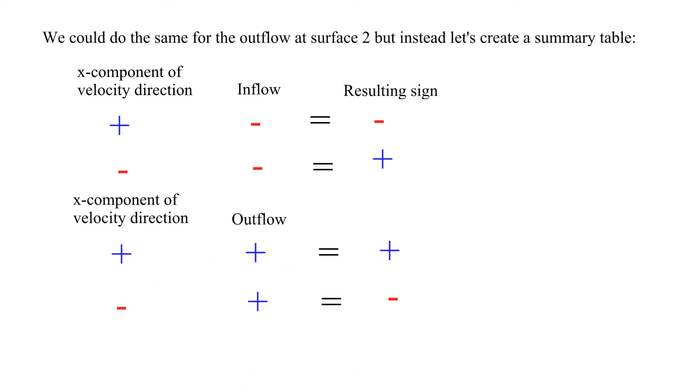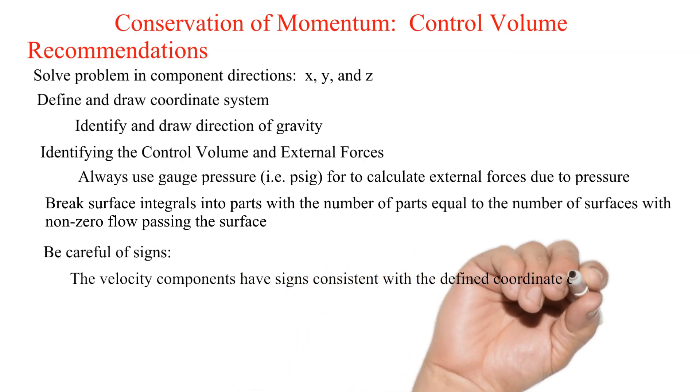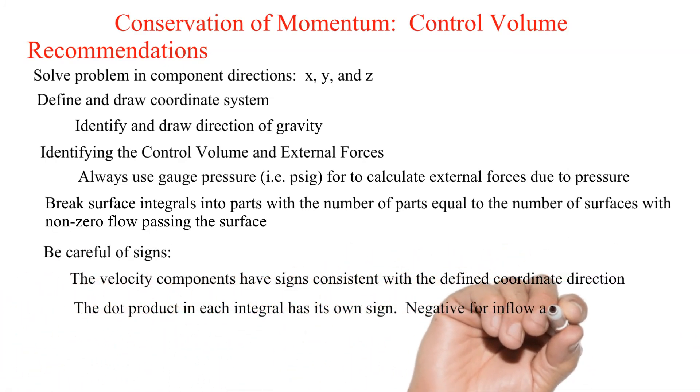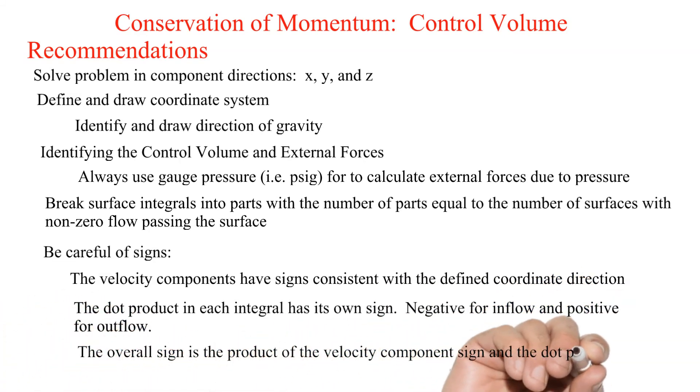The above sign conventions are general. As you gain experience it may be a good idea to always be methodical with your signs. This leads us to update our list of recommended steps: be careful of signs. The velocity components have signs consistent with the defined coordinate direction. The dot product in each integral has its own sign, negative for inflow and positive for outflow. The overall sign is the product of the velocity component sign and the dot product sign.